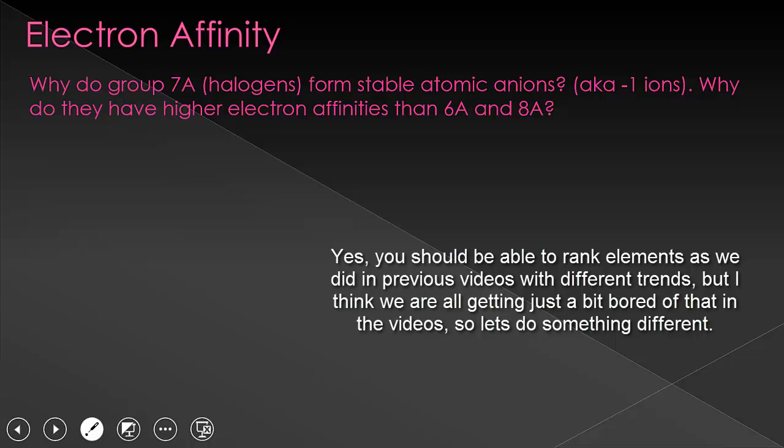Let's use our knowledge of electron affinity to explain some things that we already know in new terms. Why do the group 7A, the halogens, form stable atomic anions? Let's write the electron configurations for both fluorine and fluorine negative 1, or the fluorine anion, and see why this is. So here's fluorine.